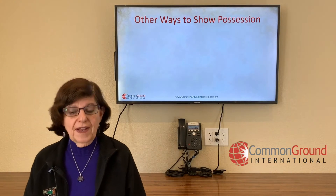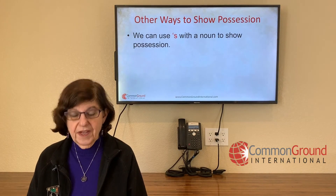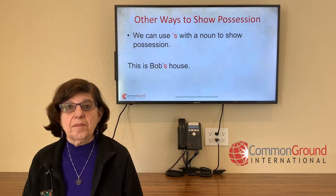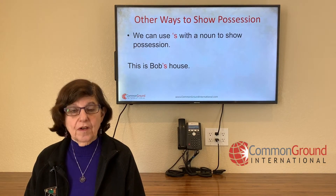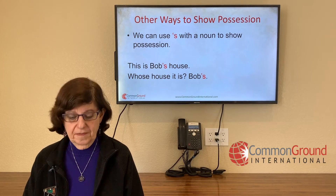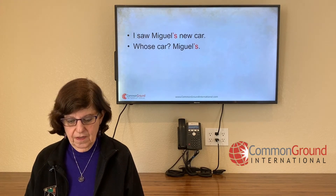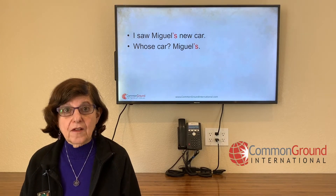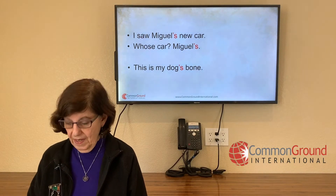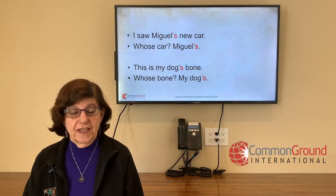We've talked about pronouns to show possession. We're going to talk about some other ways we can show possession. We can add an apostrophe S to a noun — that shows possession. 'This is Bob's house' — the house belongs to Bob. Whose house is this? It's Bob's. 'I saw Miguel's new car' — the car belongs to Miguel. 'This is my dog's bone' — the bone belongs to my dog. So we can add an apostrophe S to show possession.